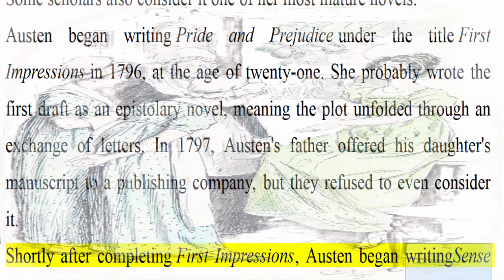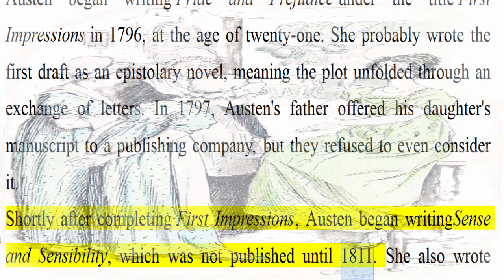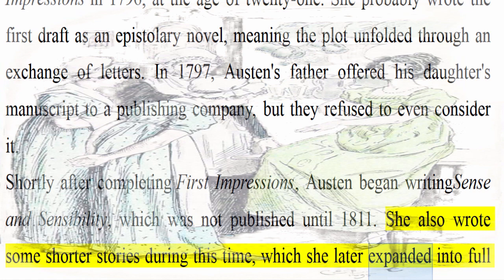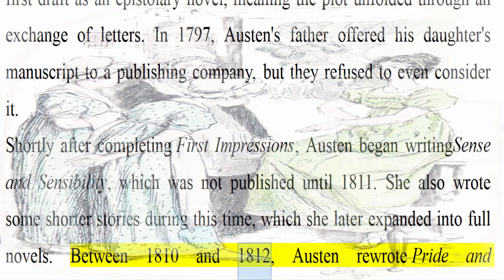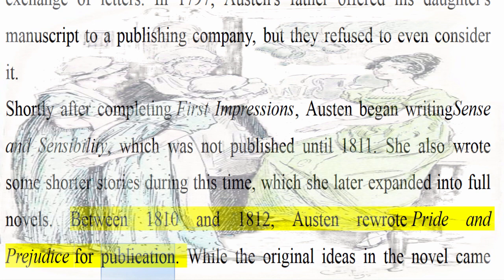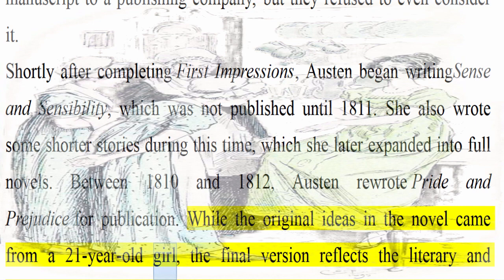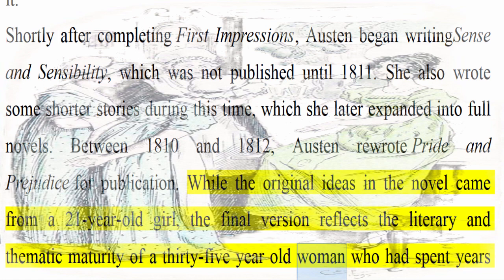She also wrote some shorter stories during this time, which she later expanded into full novels. Between 1810 and 1812, Austen rewrote Pride and Prejudice for publication. While the original ideas in the novel came from a 21-year-old girl, the final version reflects the literary and thematic maturity of a 35-year-old woman who had spent years painstakingly drafting and revising, as Austen did with all of her novels. Pride and Prejudice is the most popular of Austen's novels.